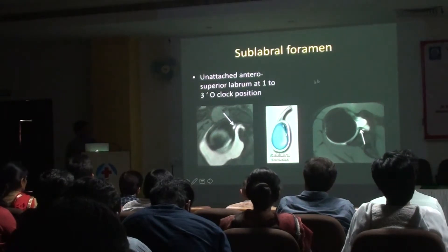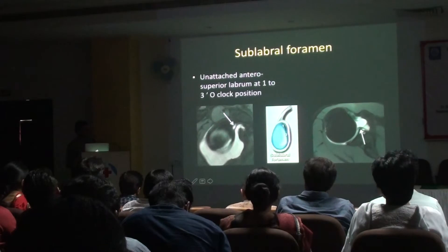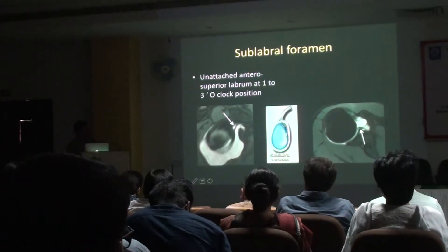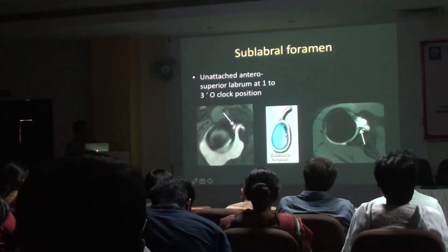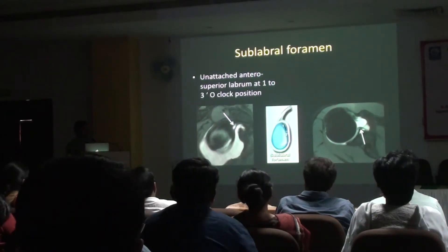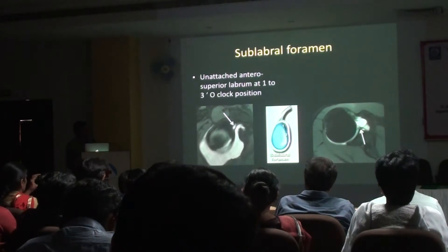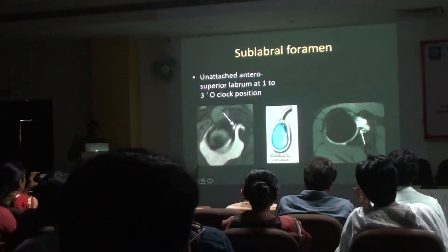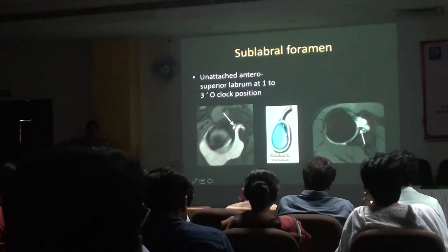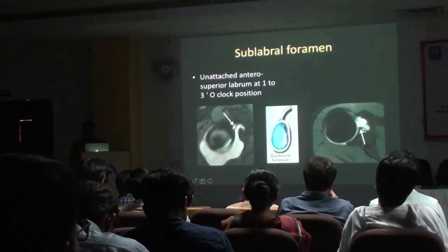The second normal variant is the sublabral foramen, seen at 1 to 2 o'clock position antero-superiorly — you always see a small foramen through which contrast seeps. Don't call it a tear. Anything antero-superior, think 100 times before labeling it as a tear.